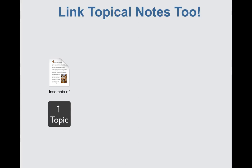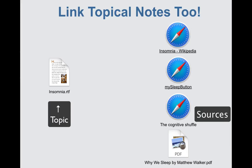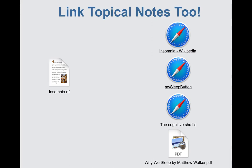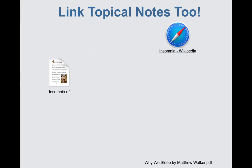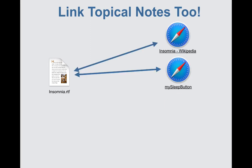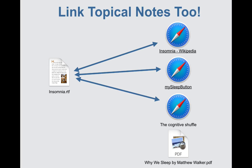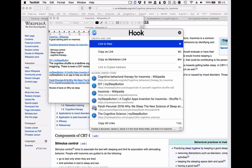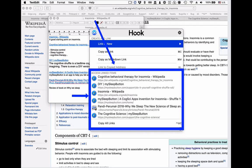Sometimes you want to take notes not about a specific document, but about a topic that has multiple sources. Hook enables you to do this very quickly too. Basically, Hook lets you link any file to any other file, web page, email, and more. For example, if you need to quickly learn about insomnia, you can create a note about insomnia, and as you discover useful web pages and download great PDFs on the topic, you can link them to your topical note. In this case, I've linked the current TextEdit document to a bunch of web pages, which you see listed here in the Hook window, so that you can immediately access any of these linked documents.